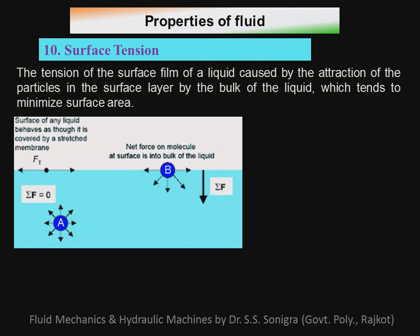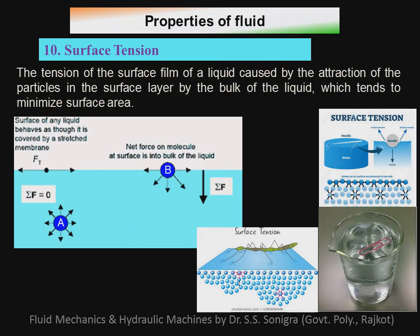To understand surface tension, consider water stored in a tank. Take two atoms — atom A, which is fully submerged, and atom B, which is half submerged in water and half exposed to the atmosphere. Atom A is under balanced force because it is subjected to equal cohesive forces in all directions, so it is in equilibrium (ΣF = 0).